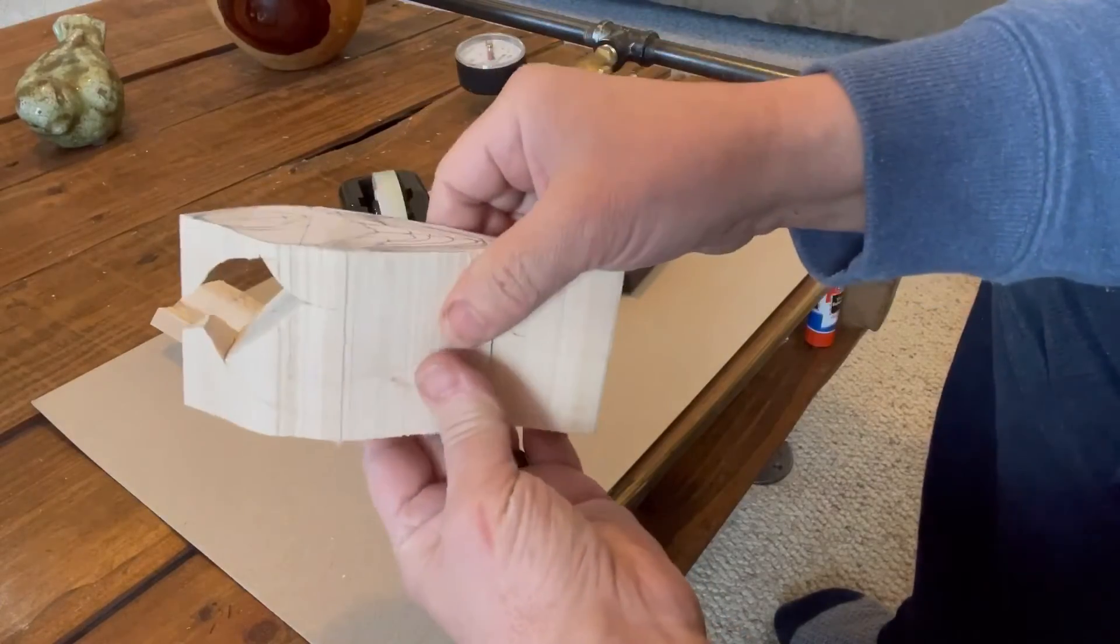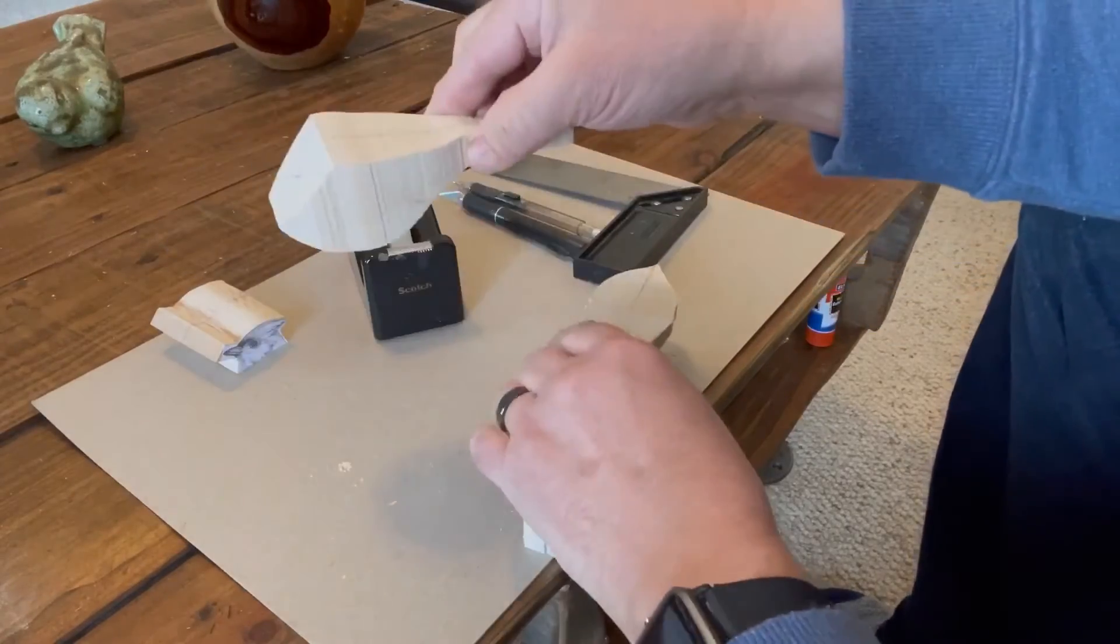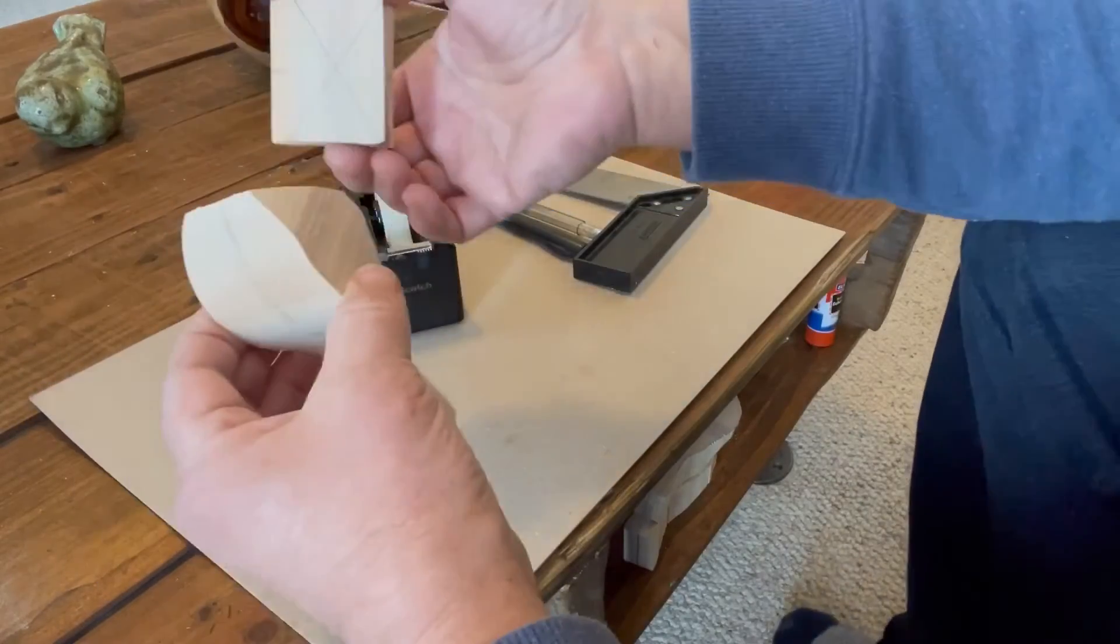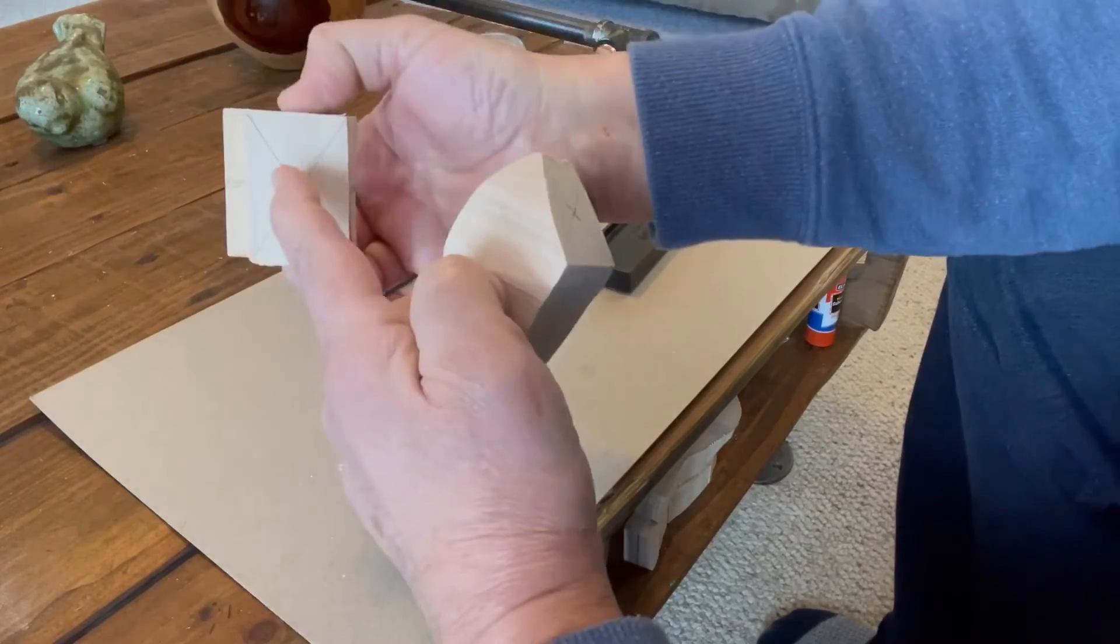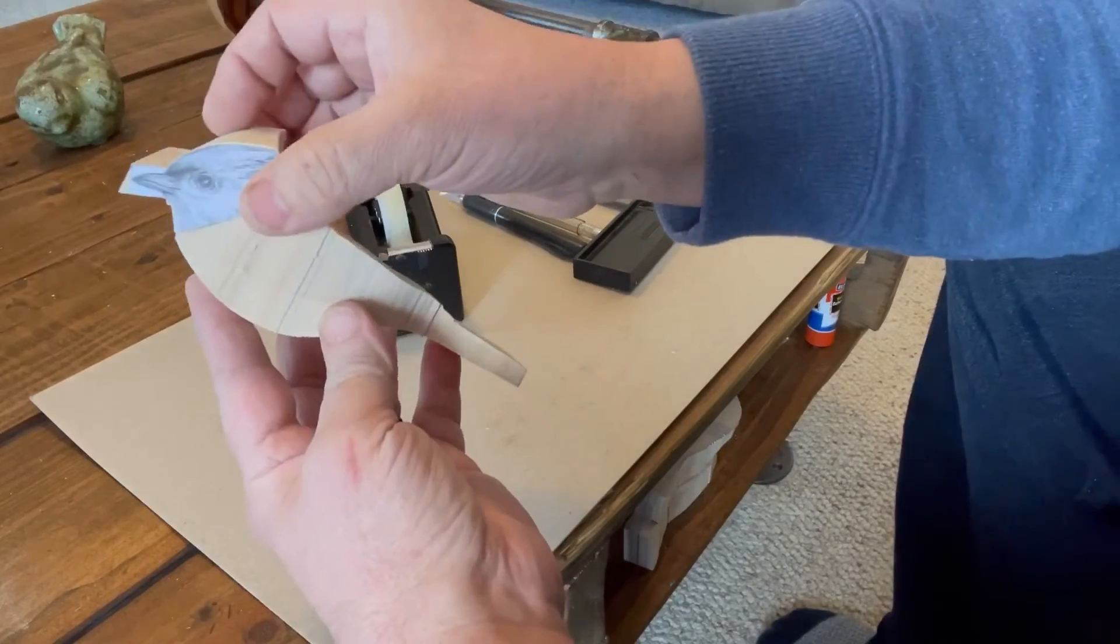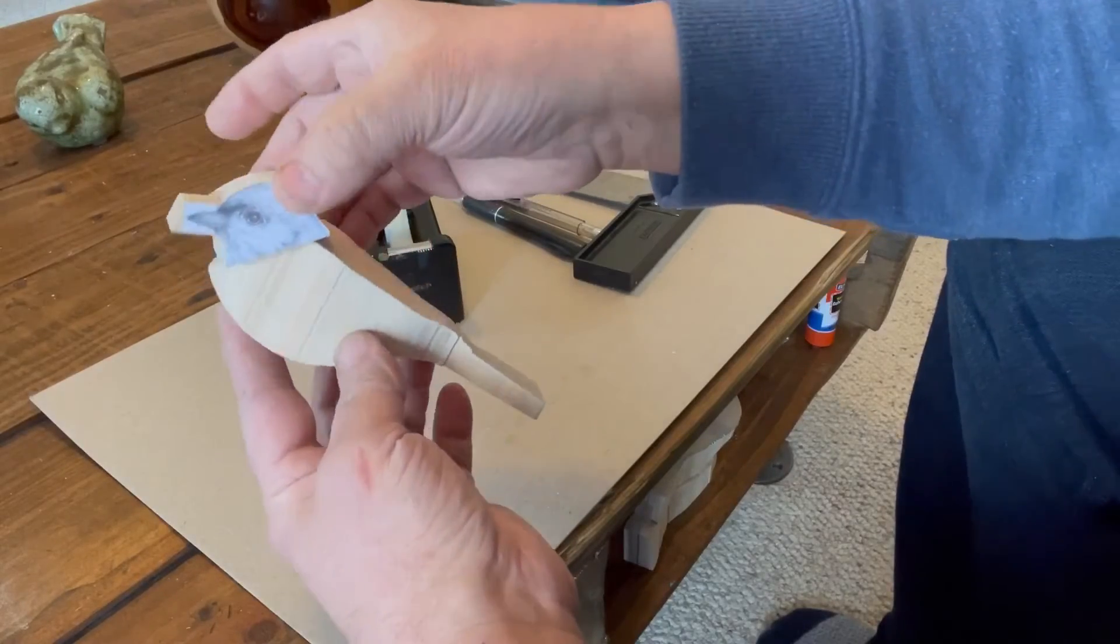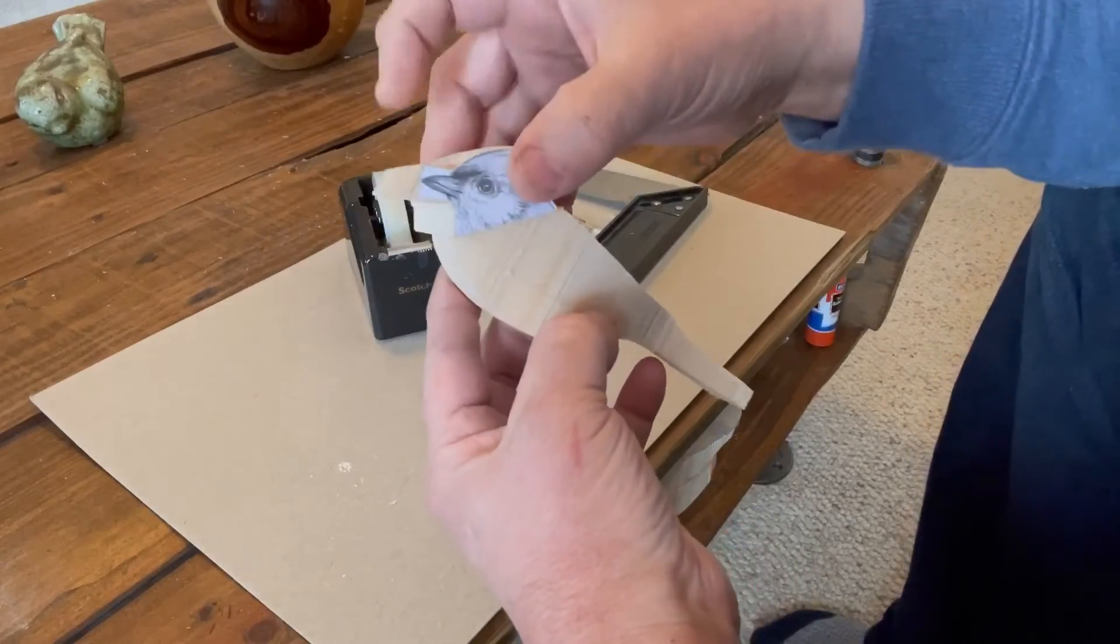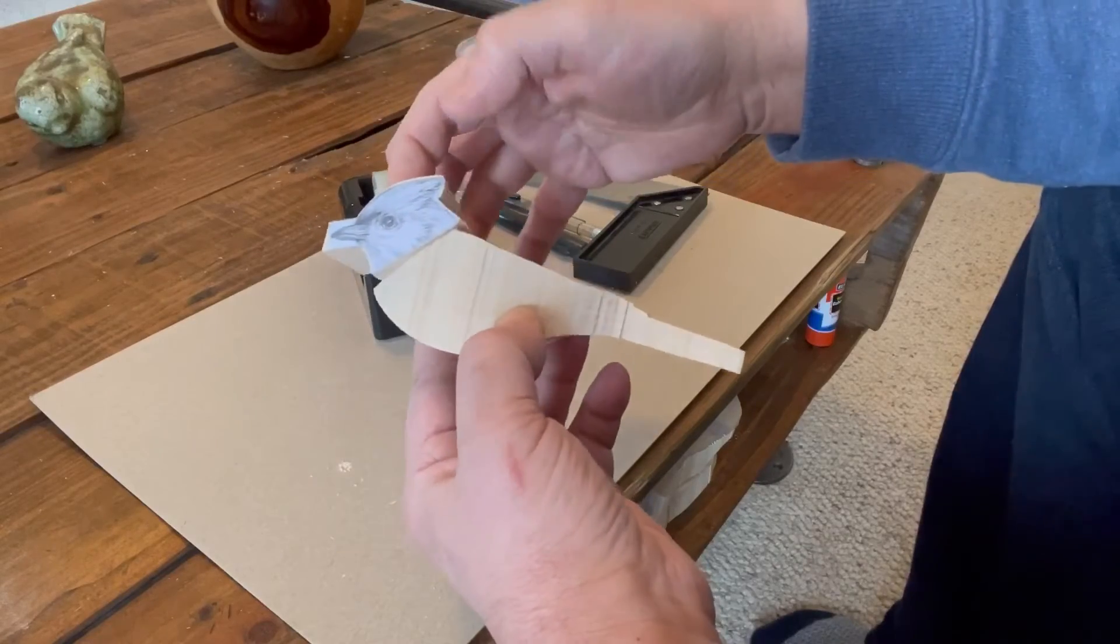All right. So we taped the block together with a little bit of scotch tape, and scotch tape seems to be fine. It doesn't give up the saw blade or anything like that. And the reason why we do that is we want to put everything back together and cut out this profile. This will give us the blank for the body.